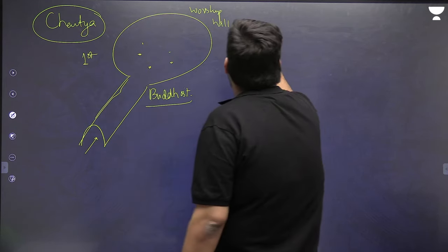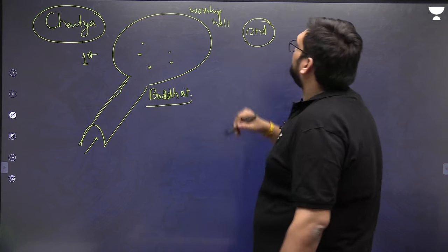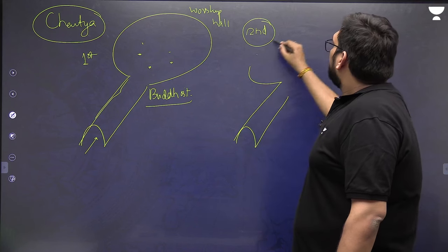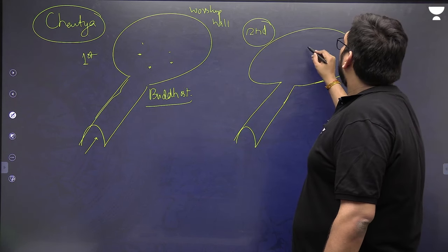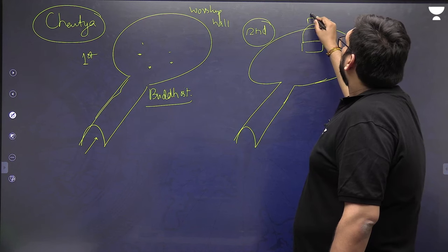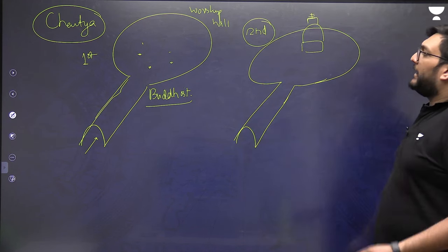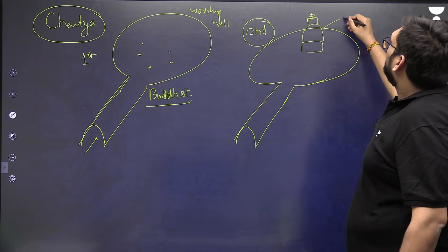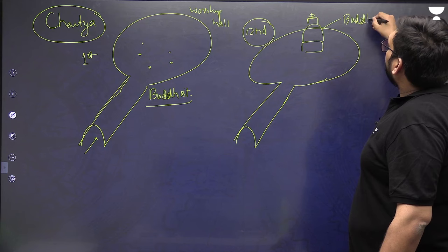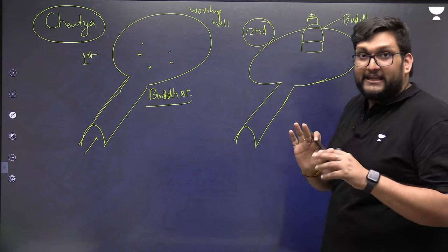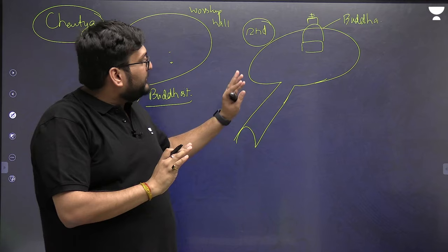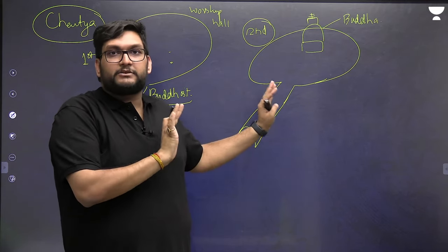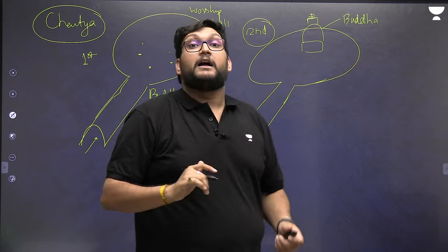The second type of chaitya is quite interesting. You enter it and within it you have a small stone stupa. This small stupa represents Buddha himself. This is from before the third Buddhist council, when there was no Hinayana-Mahayana split yet. Buddha is represented in the form of a stupa.